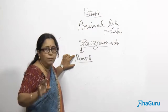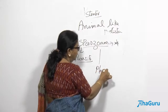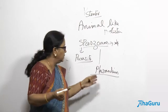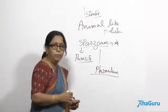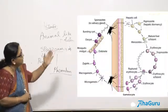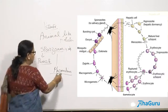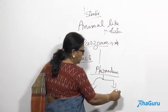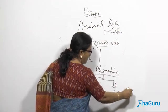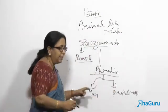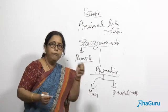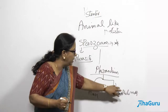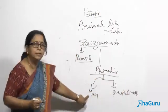Plasmodium is a sporozoan which causes the disease malaria. Different species include plasmodium vivax, plasmodium falciparum, and plasmodium ovale. Plasmodium involves two hosts: human beings and the female Anopheles mosquito. The female Anopheles mosquito acts as the primary host because sexual reproduction happens inside it. Man is considered the secondary host, though the plasmodium spends most of its time in man.